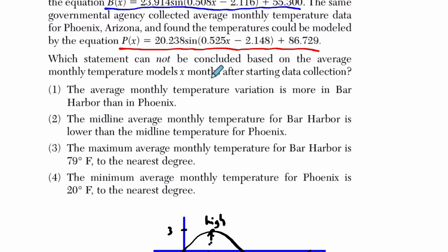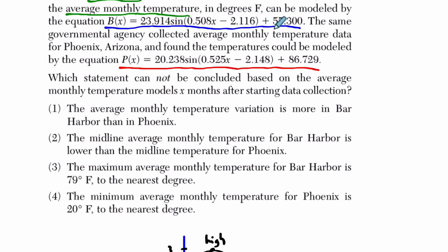So if I go back up here, we're going to take 55.3, and we're going to add it to our amplitude. And then we're going to do 55.3 and subtract our amplitude, and then subtract the difference between those two numbers.